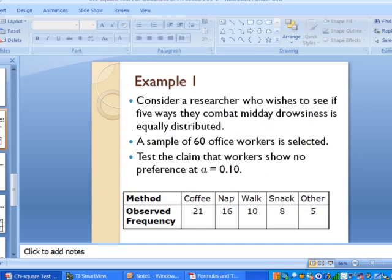So let's take a look at an example here and see how we can do this, and see how we can use our calculator to help us compute the test statistic. So let's consider a researcher who wishes to see if five ways they combat midday drowsiness is equally distributed. So we have a sample of 60 office workers selected, and we want to test the claim that workers show no preference at a 10% level of significance.